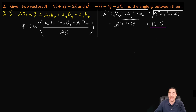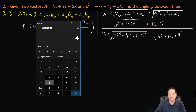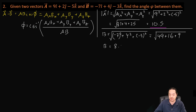Let's do the same thing for vector B. B is going to be the square root of negative 7 squared plus 4 squared plus negative 3 squared — that's 49 plus 16 plus 9, which is 74. The square root of 74 is 8.6, so the magnitude of B is 8.6.